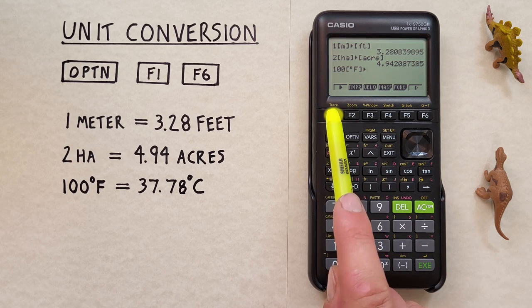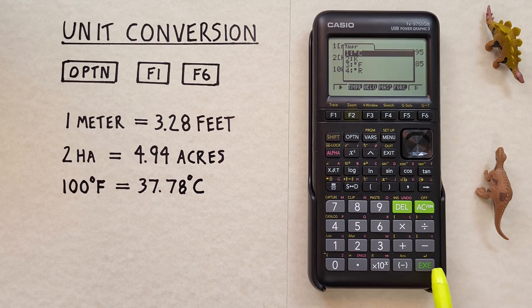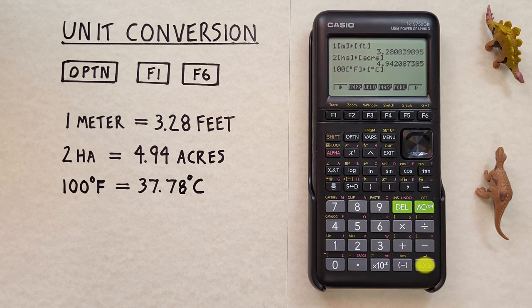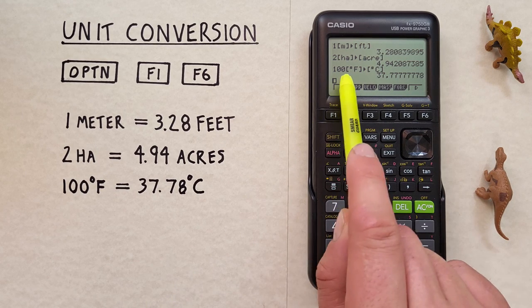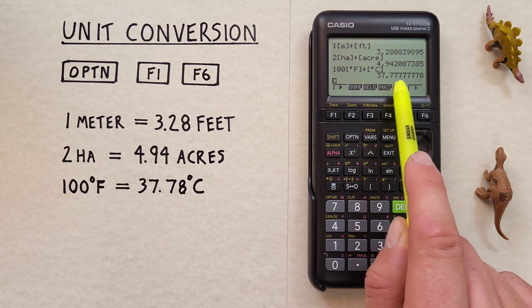Convert to, back to temperature, and choose degrees Celsius. Hit EXE and we see our 100 degrees Fahrenheit converts to a rounded 37.78 degrees Celsius.